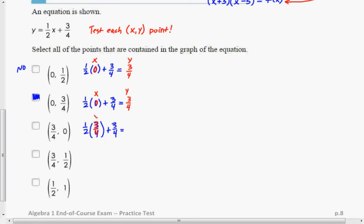It is not going to equal 0. Let's see. 1 half times 3 fourths is 3 sixths. That's 1 half plus 3 fourths is 1.25. It equals 5 fourths. Oh, it's been a long day. 0.5 times 0.75 plus 0.75. 1.125.